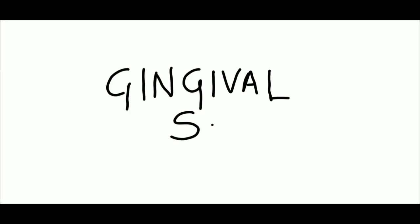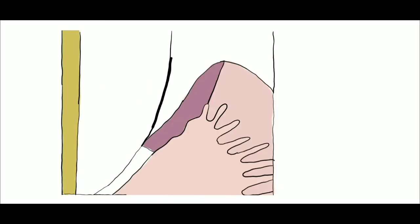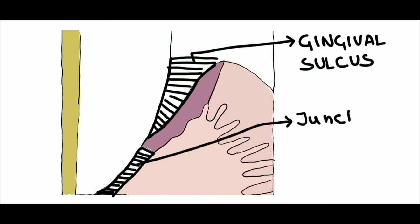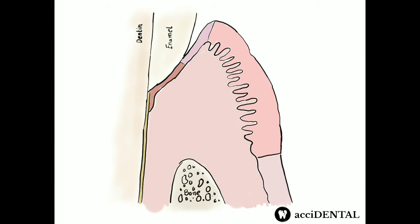Next is gingival sulcus, which is a V-shaped valley or space that is present between the tooth and the epithelium of the free gingival margin. It extends apically to the junctional epithelium. The depth of this sulcus is a very important diagnostic parameter and it barely permits the entrance of a probe.